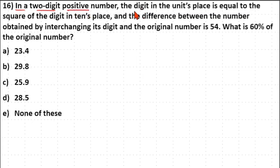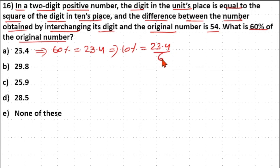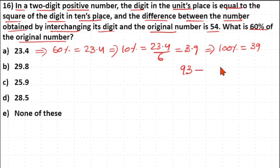A similar question: in a two-digit positive number, the unit place digit equals the square of the tens-place digit, and the difference between the interchanged number and the original is 54. What is 60% of the original number? For option A: if 60% is 23.4, then 10% is 23.4 ÷ 6 = 3.9, so 100% is 39. Interchanging 39 gives 93, and 93 − 39 = 54, which matches. So option A is your answer.